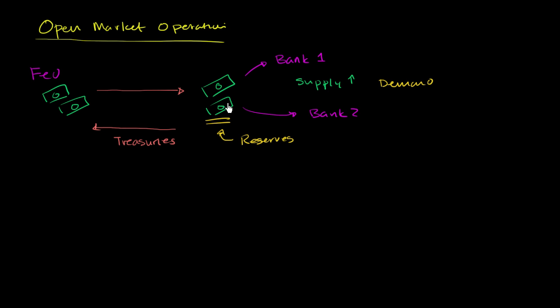Maybe before this money entered the system, maybe bank two was running low on reserves. But now people have deposited money in bank two. So bank two doesn't need it as much. And so if you have the supply of money going up, you have the demand for money going down.